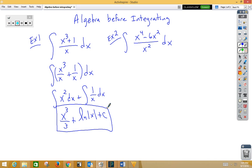In example 2, same thing. We can separate as x to the fourth over x squared minus 6x squared over x squared dx. So now we have x squared minus 6 dx.